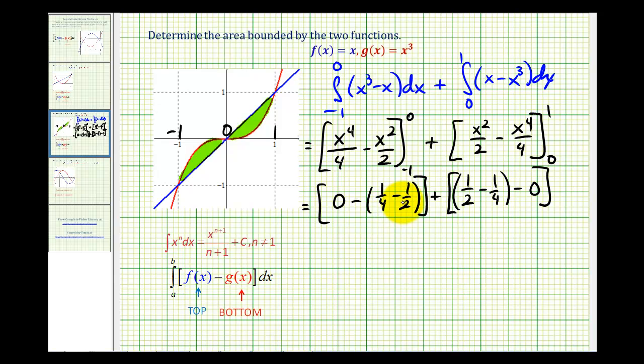So one-fourth minus one-half is negative one-fourth. But we're subtracting that, so it's one-fourth. Plus, here we have one-half minus one-fourth, which is also one-fourth. So we have a total of two-fourths or one-half of a square unit for the area of this entire bounded region.